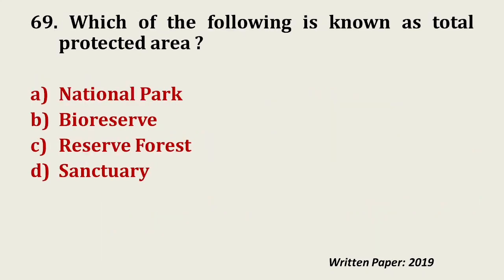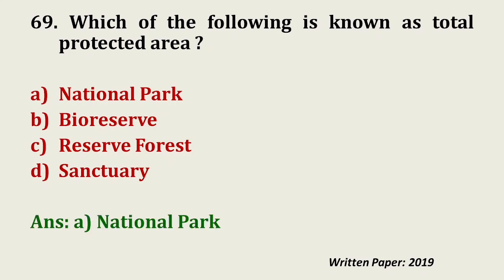Question number 69: Which of the following is known as a total protected area — national park, bio-reserve, reserve forest, or sanctuary? In India, as per the Wildlife Protection Act, there are four categories of protected areas: wildlife sanctuary, national park, conservation reserve, and community reserve. The answer is national park. We will discuss the reason in some other chapter.